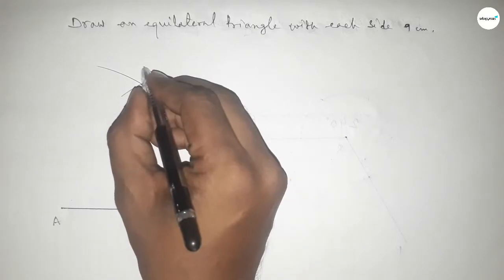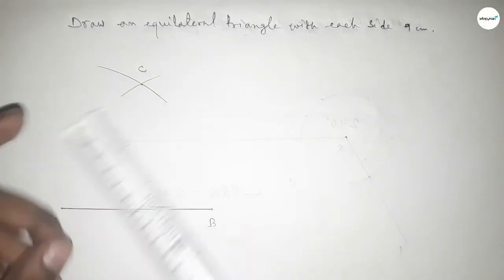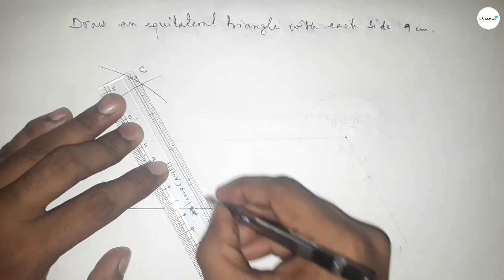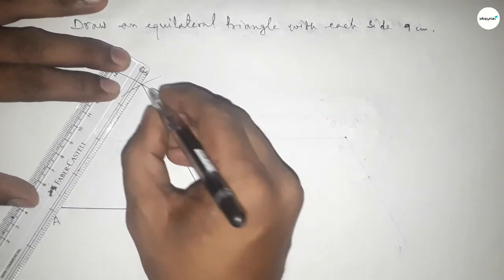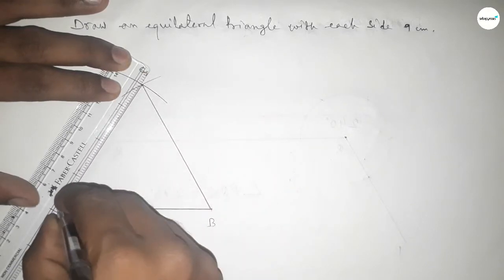And this is point C. Now join this side and join this side to get an equilateral triangle with each side 9 centimeters.